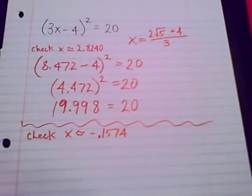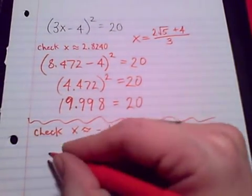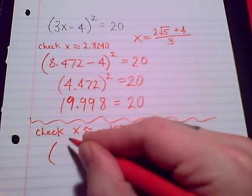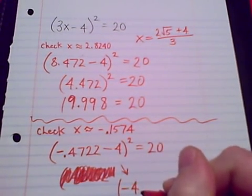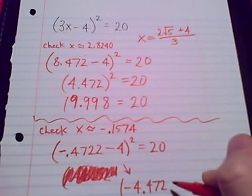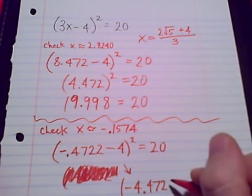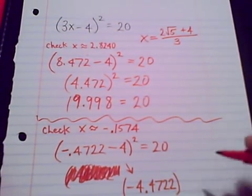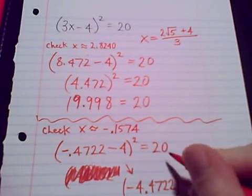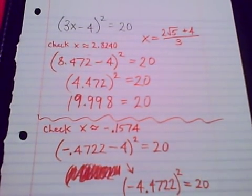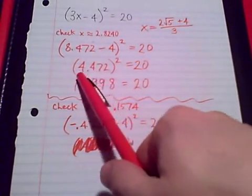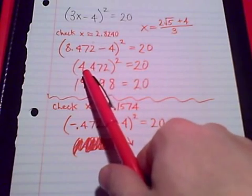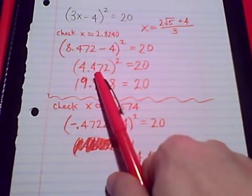All right. Let's check the other decimal approximation. Negative 0.1574. Three times that number. Negative 4.4722. Two should equal 20 once it's squared.